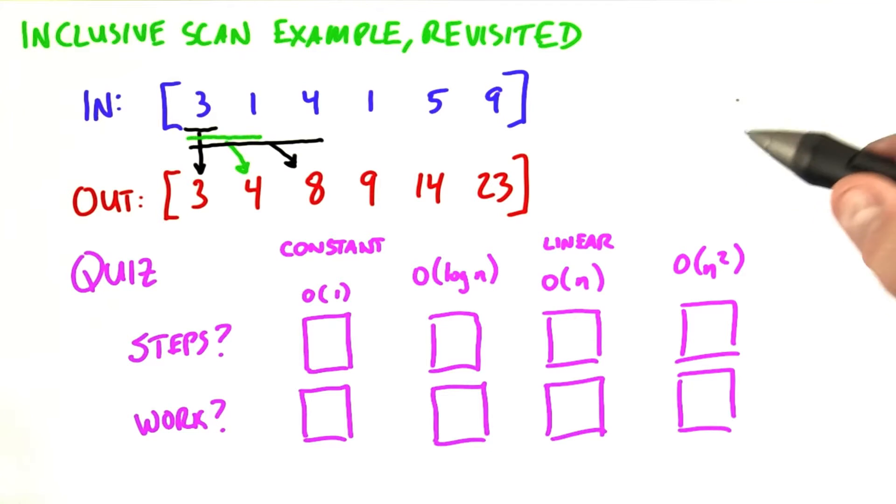First, we're going to look at the number of steps, the step complexity, and that should be the same as reduction, since all we're running is a whole bunch of parallel reductions.